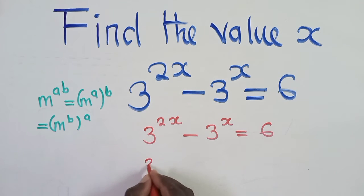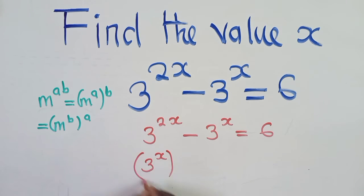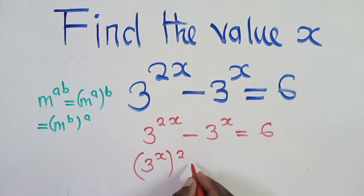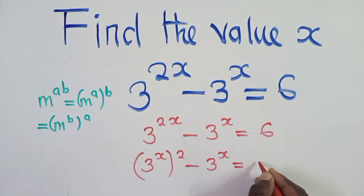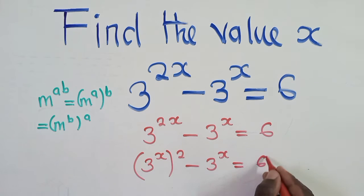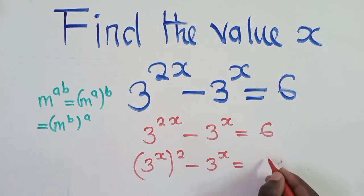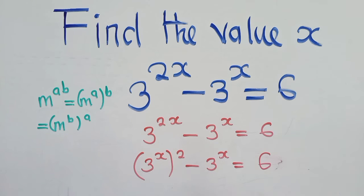We need to use that law right here. So we're going to separate and write: 3 to the power x squared, minus 3 to the power x, is equal to 6.